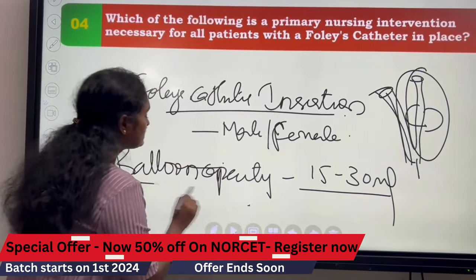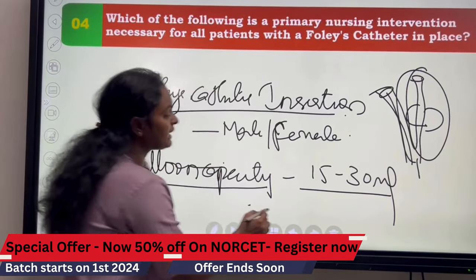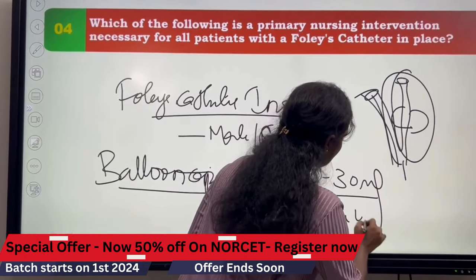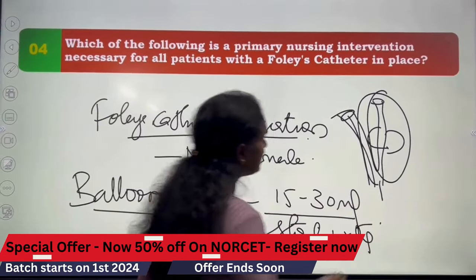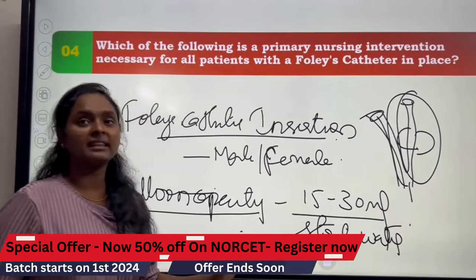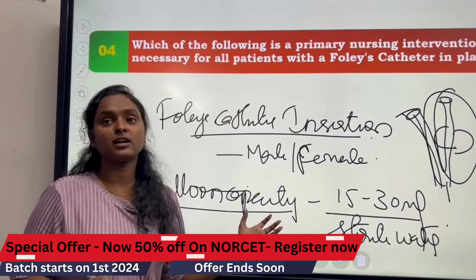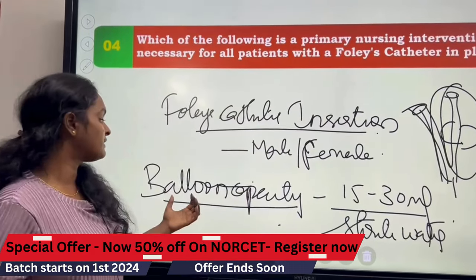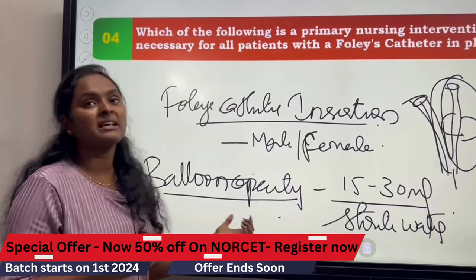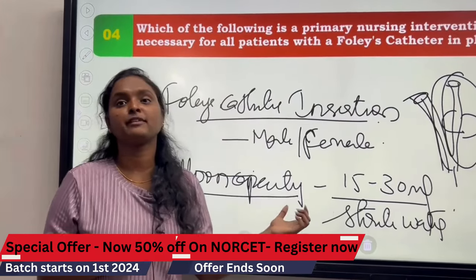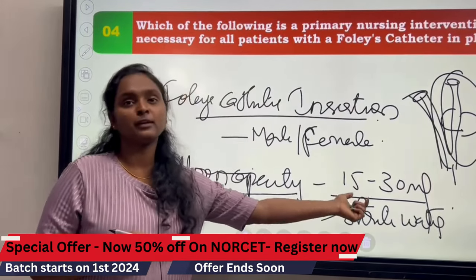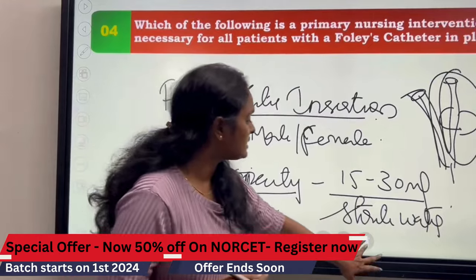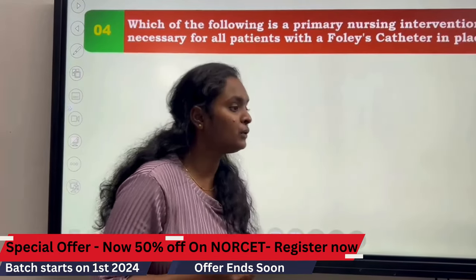What we are doing? We are inserting the sterile water after the insertion of the catheter. So how much capacity will be used for this? Balloon capacity is 15 to 30 ml. So this is an important question from an exam point of view.